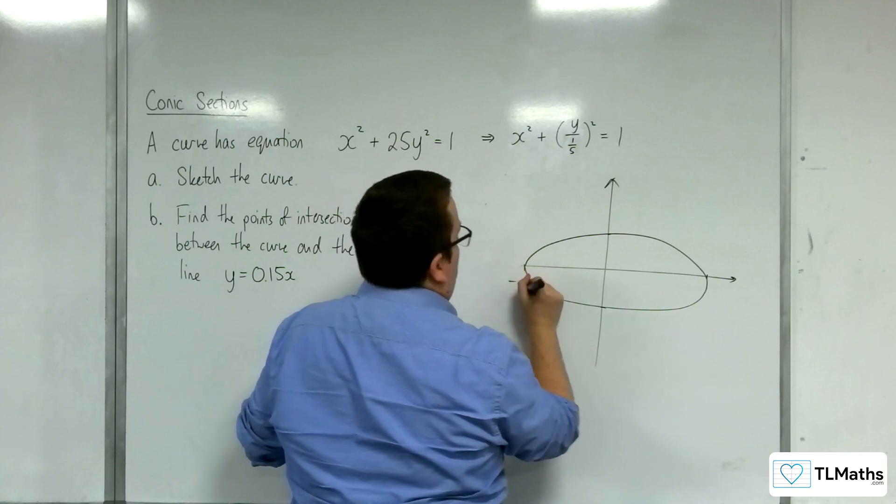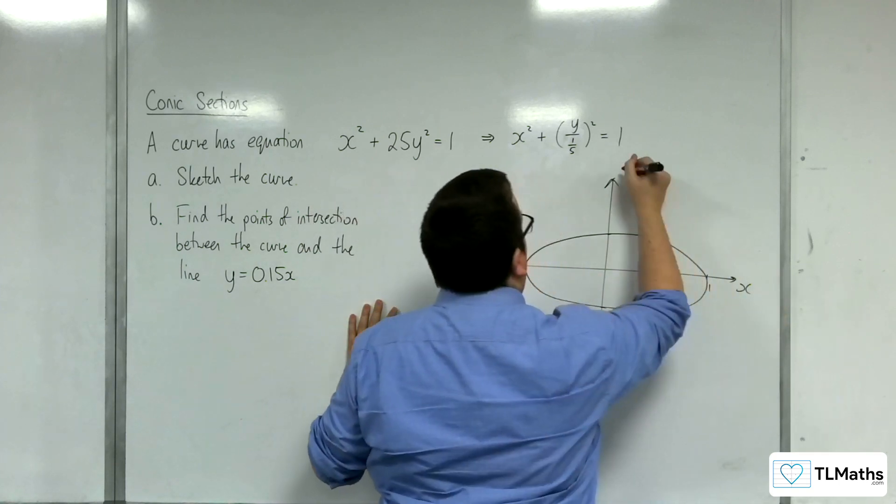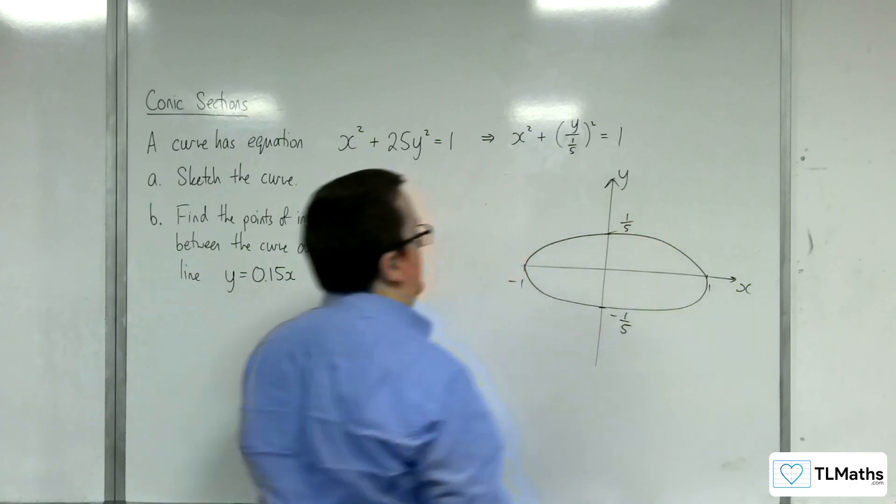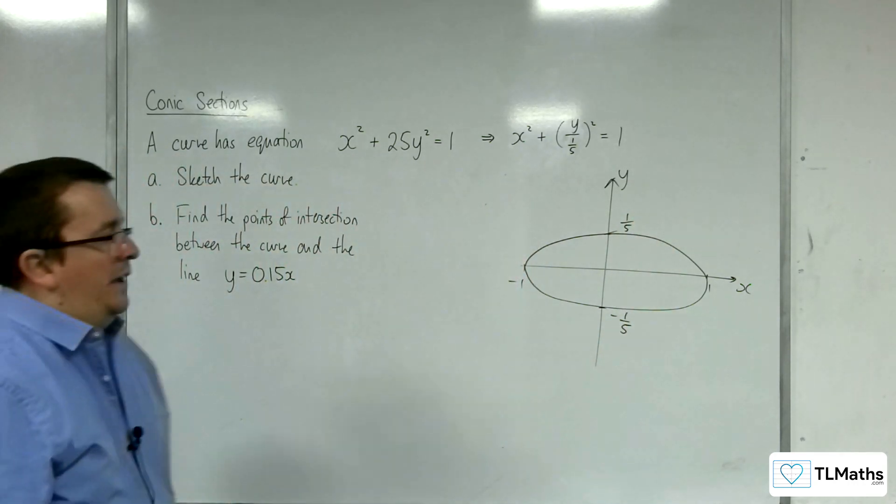So, x is going between minus 1 and 1, and we're going between minus a fifth and positive a fifth. And that's my shape.